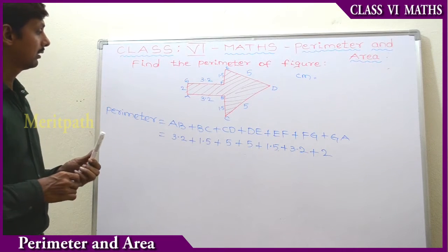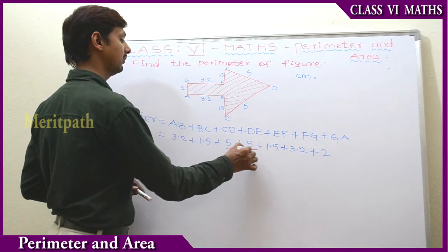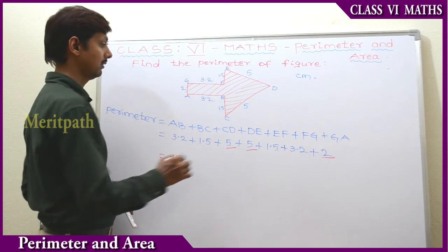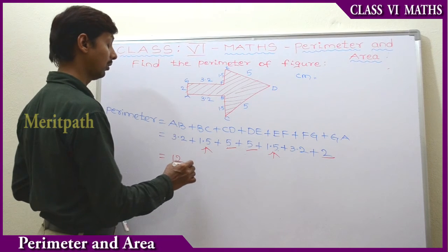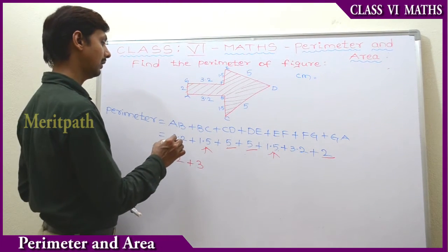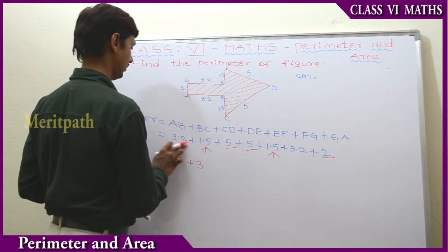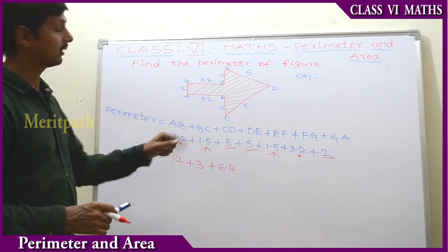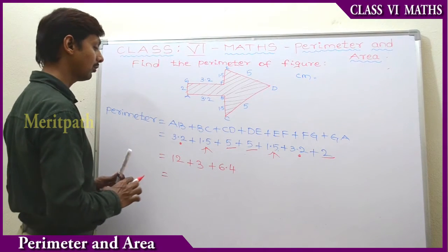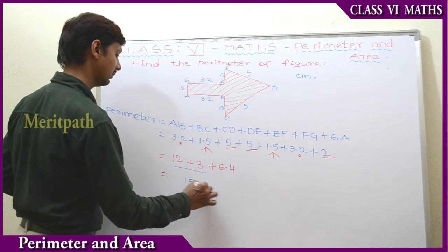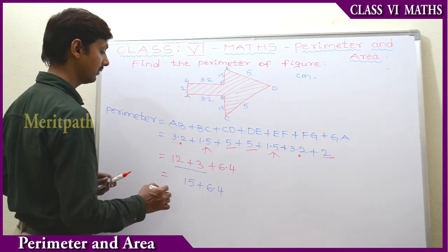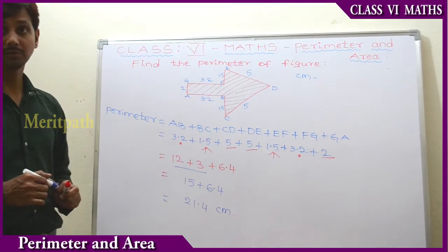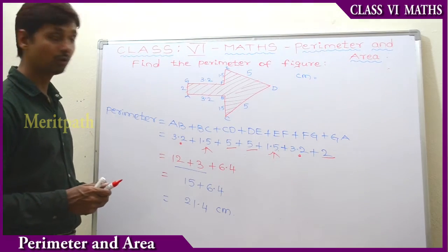So here, let's add these numerical values. 5 + 5 + 2 = 12. And 1.5 + 1.5 = 3, which is a whole number. And 3.2 + 3.2 = 6.4. Now let's add all the numbers: 12 + 3 + 6.4 = 21.4 centimetres. So the perimeter of this figure is 21.4 centimetres.